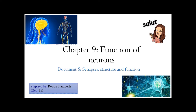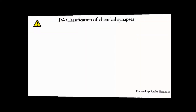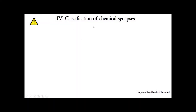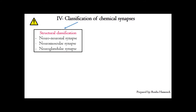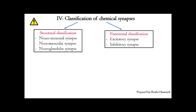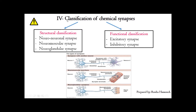Hello again. We arrive at the classification of chemical synapses. In the previous video we explained that chemical synapses are synapses where the cells do not touch. Chemical synapses can be classified according to their structure or according to their function.